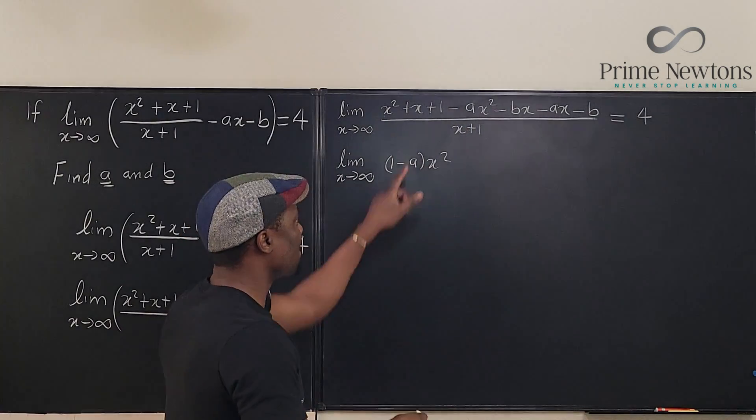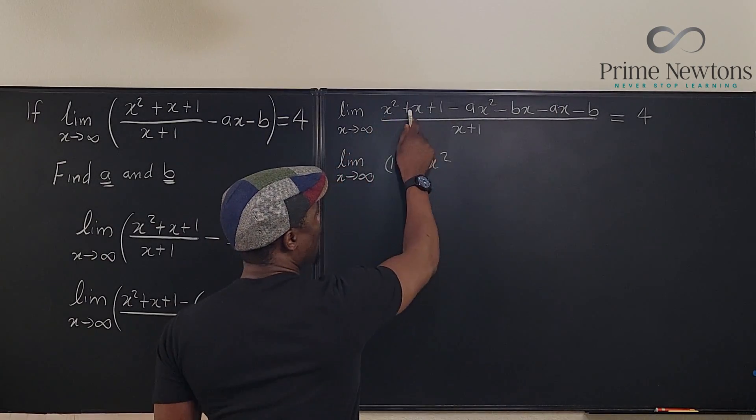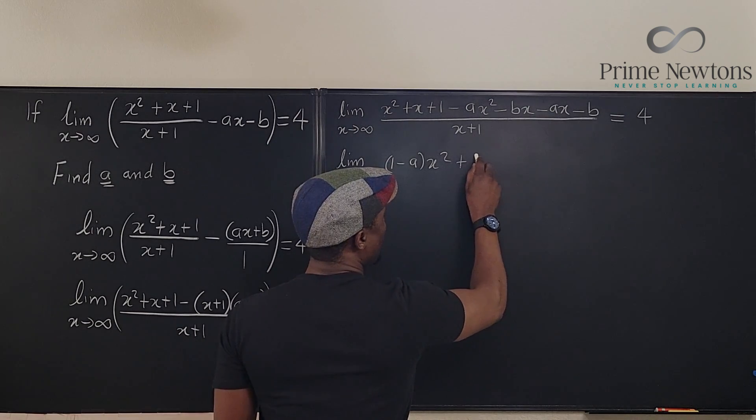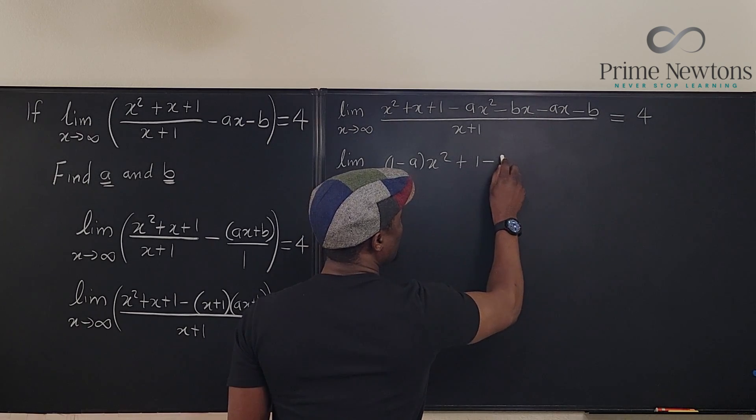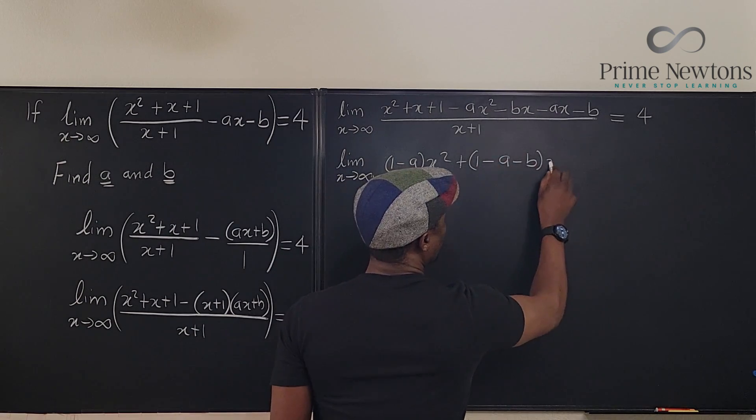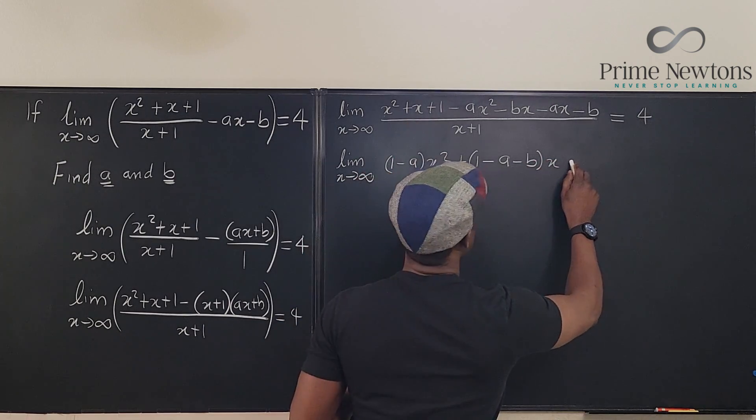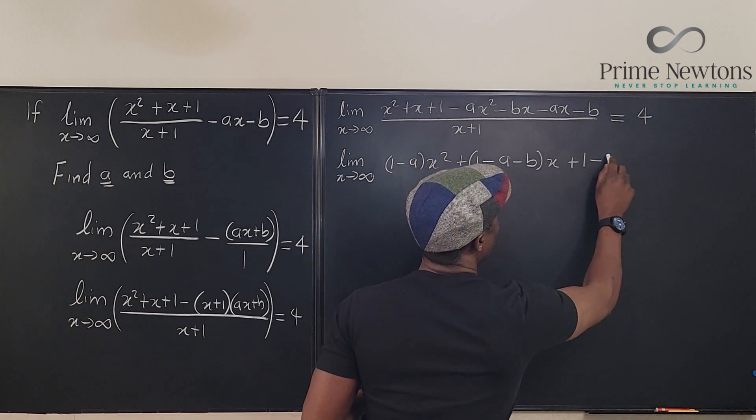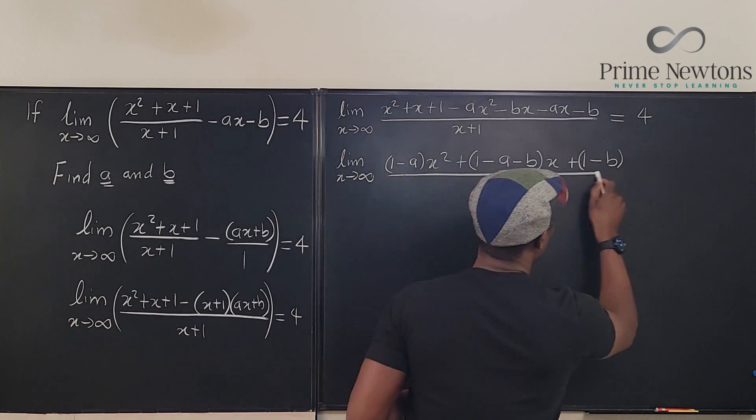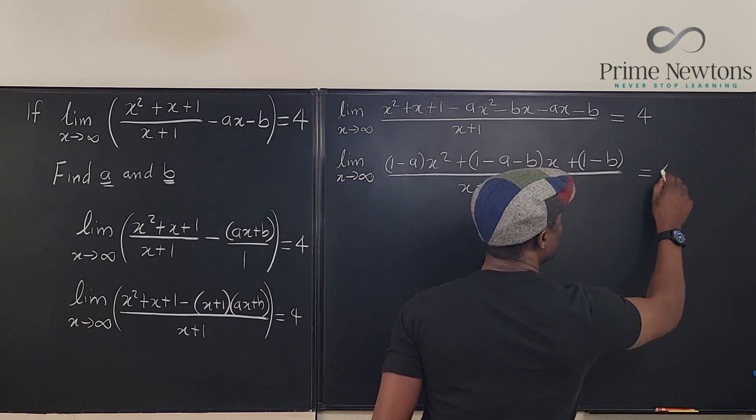Let's go to the terms with x. This has x, this has x, this has x. So there's 1 minus b minus a. So I can say plus (1 minus a minus b) x, then plus (1 minus b). All over x plus 1. And this limit still gives us 4.